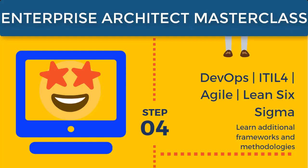I'm going to focus on different methodologies — DevOps in depth, ITIL 4 frameworks in depth, Agile, and then Lean Six Sigma: how do you eliminate all the waste, redundant business processes? Step four is fairly in-depth. Once you effectively master the DevOps cycle, Agile, and Lean Six Sigma, we move forward.